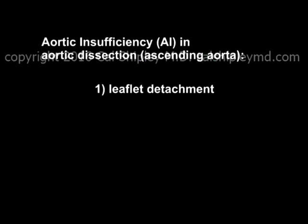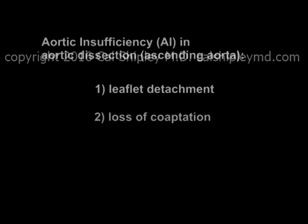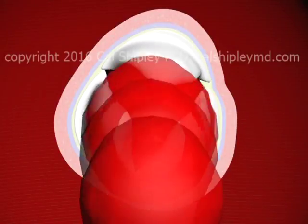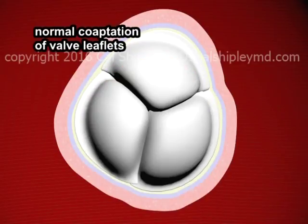The second form of aortic insufficiency associated with aortic dissection is loss of aortic valve leaflet coaptation. Coaptation refers to the normal physical closure of the aortic valve leaflets, with the edges of each leaflet butting up against the edges of the leaflets on either side during valve closure.